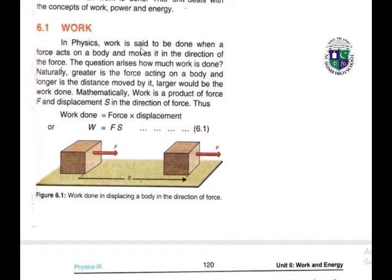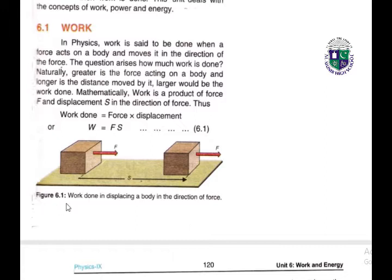Work is said to be done when a force F acts on a body and that force moves the body in the direction of the force. Greater the force acting on a body and longer the distance moved, larger will be the work done. Mathematically, work is defined as the product of force and displacement S in the direction of the force: W = F × S. Figure 6.1 shows work done by displacing a body in the direction of the force, where F is the force and S is the displacement.